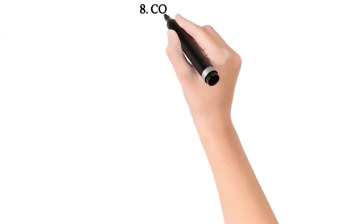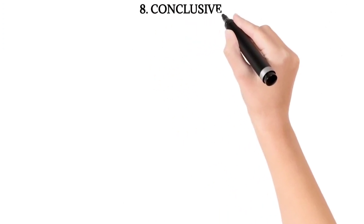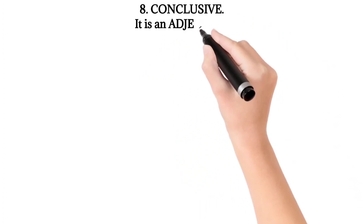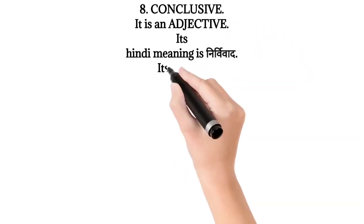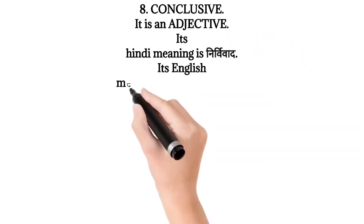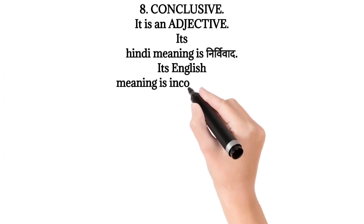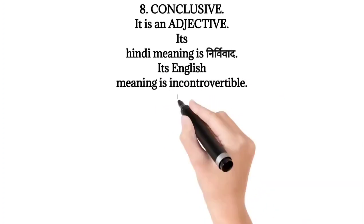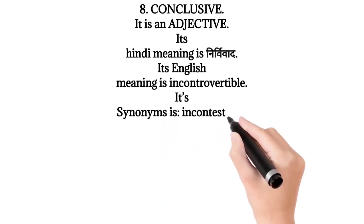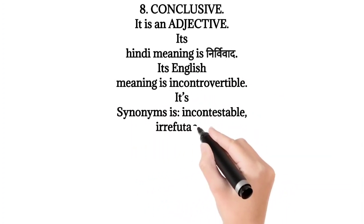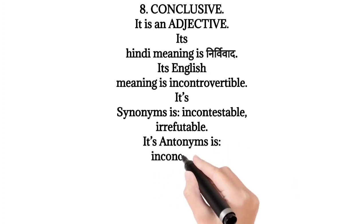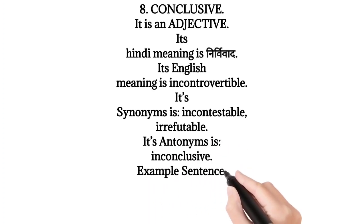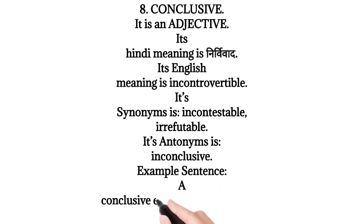8. Conclusive. It is an adjective. Its Hindi meaning is Nirvival. Its English meaning is Incontrovertible. Its synonyms are Incontestable, Irrefutable. Its antonym is Inconclusive. Example sentence: A conclusive evidence was provided.